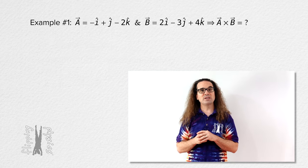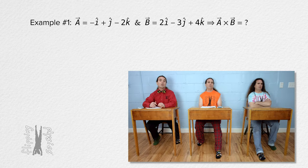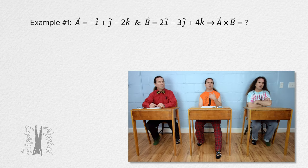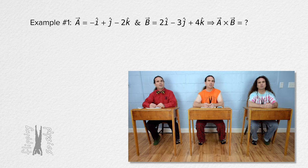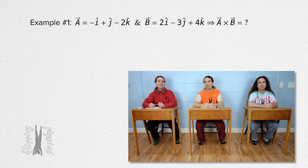Bobby, please read the problem, and Billy, please translate the problem. There are no words to read, just letters and numbers. Right, but you can still read it. Okay — when vector a equals negative i plus j minus 2k, and vector b equals 2i minus 3j plus 4k, determine a cross b. I don't really think there's anything to translate, is there Mr. P? I can agree with that, Billy.